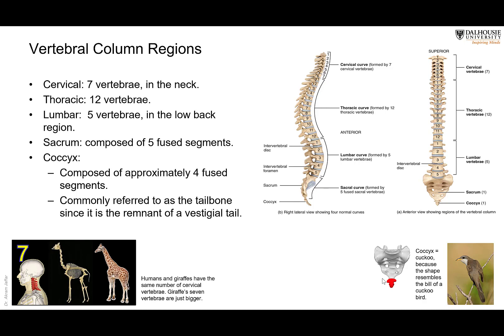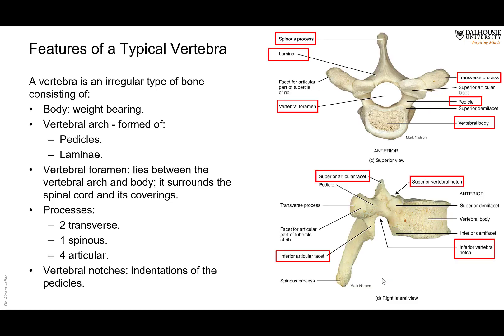A typical vertebra has several features. Looking at it from above and from the side, there is a body of the vertebra. The body is the weight-bearing part — the weight of the body passes through it and is transmitted to the next vertebra below. As we go down the vertebral column, the force increases because the weight is increasing.